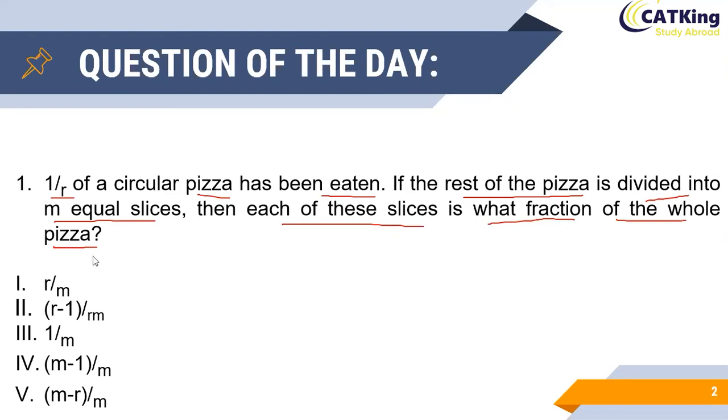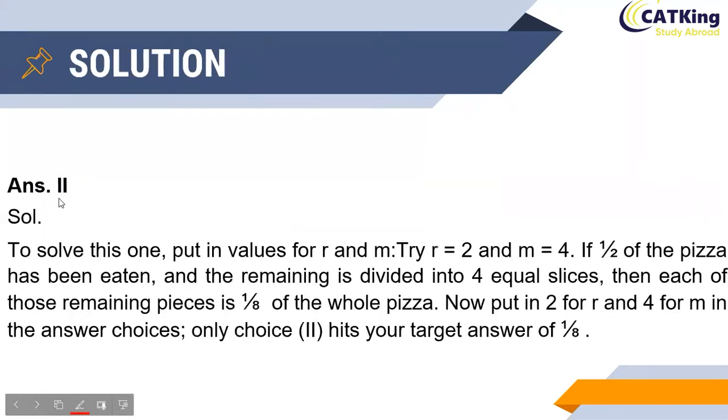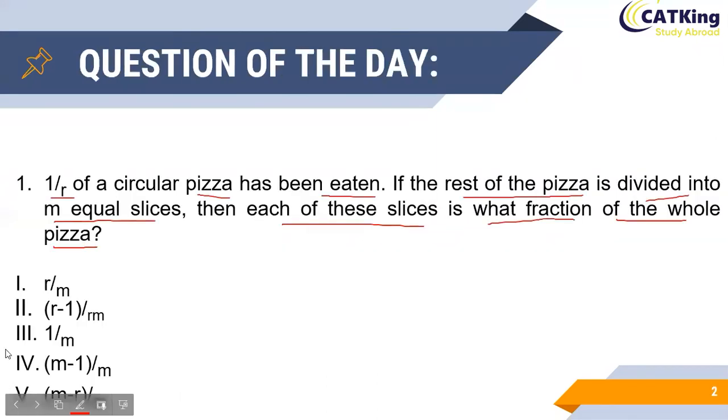Before we move on to the detailed solution, let us take a quick glance at the correct answer. As you can see, the correct answer is option 2, that is r minus 1 the whole divided by rm. Now let us see how we arrived at this particular answer.